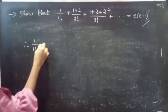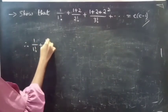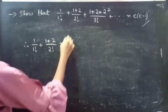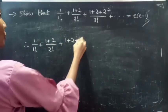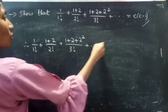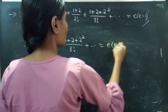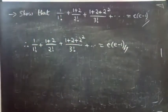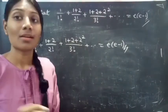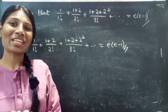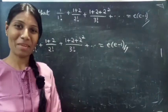Therefore, 1 by 1 factorial plus 1 plus 2 by 2 factorial plus 1 plus 2 plus 2 squared by 3 factorial plus so on equals e into e minus 1. This completes the problem. Hope you understood. We will see you in the next video. Bye-bye.